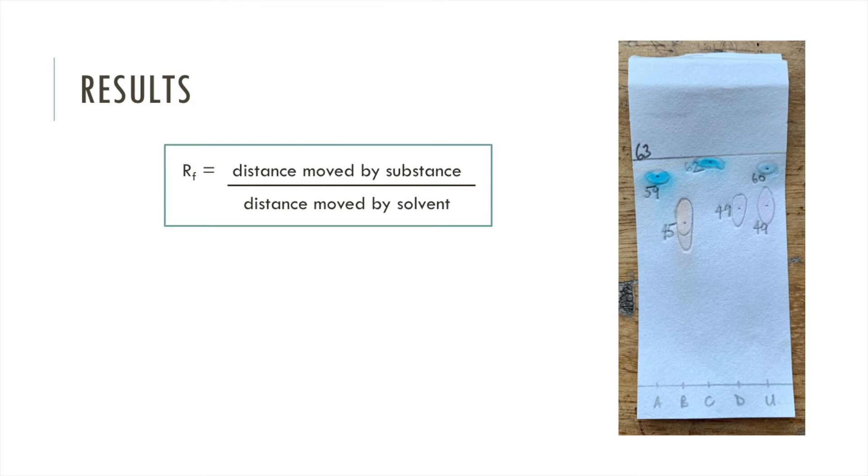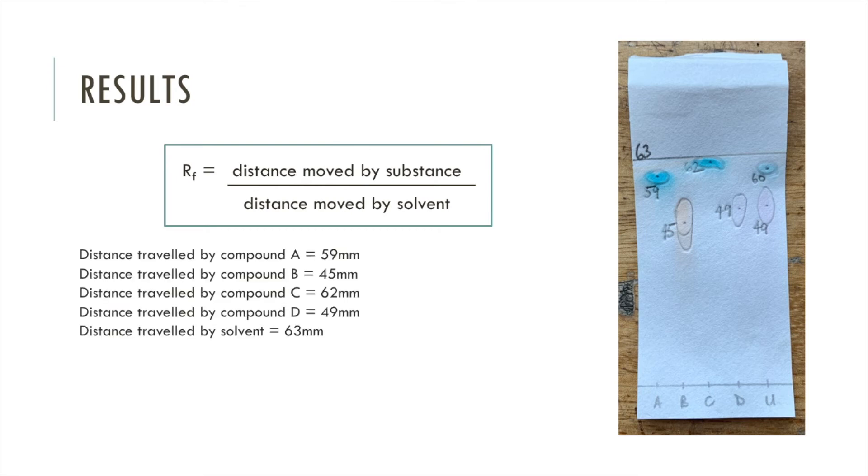I found the distance travelled by compound A was 59 mm, B was 45, C was 62 and D was 49. And the distance travelled by the solvent was 63 mm. So we work out the RF of A by dividing the distance it travelled with the distance the solvent travelled. So 59 divided by 63 and that gives us an RF value for A of 0.94.